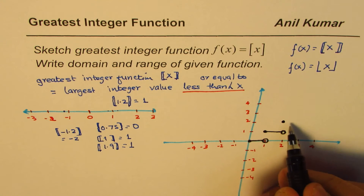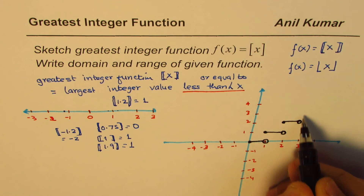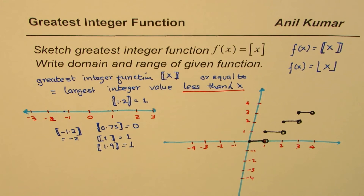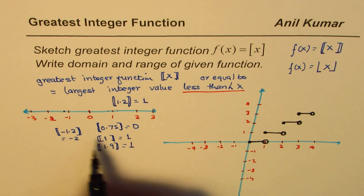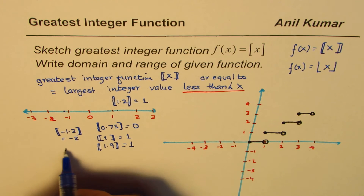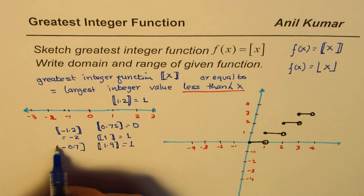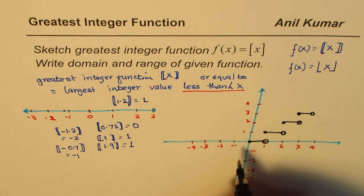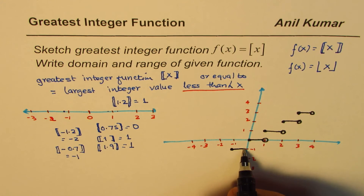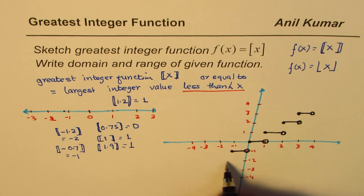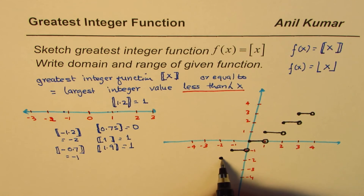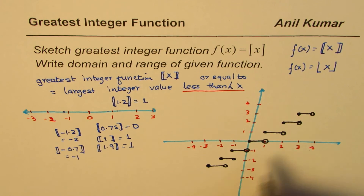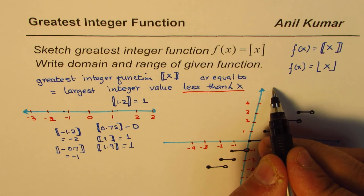That is how we have our steps. At 3 it goes like this — and then continues. On the negative side, take a number like negative 0.7: it is here on the number line and on the left side is minus 1, so the greatest integer value is minus 1. Any value in that interval will have a filled circle on one end and an open circle on the other. This pattern is followed throughout — filled on the left, open on the right.